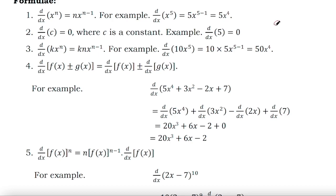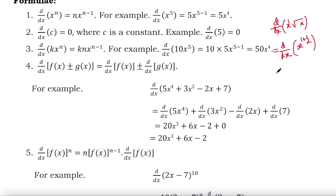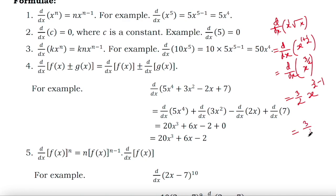Now let us differentiate x root x. First I need to do some simplification. x root x equals x to the power 1 times x to the power half, which equals x to the power 3 by 2. Now applying the power rule: the derivative is 3 by 2 times x to the power 1 by 2, which equals 3 by 2 root x.